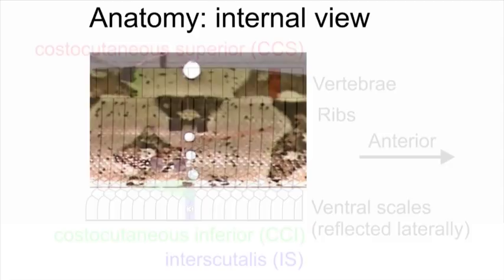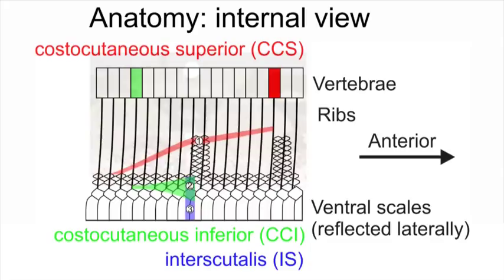The relevant muscles for this mode of locomotion are the costocutaneous superior in red, extending posteriorly and ventrally from the rib to the skin. The costocutaneous inferior in green extends anteriorly from the tip of the rib to the skin. And the fibers of the interscutalis muscle are in blue and confined to the skin, extending longitudinally from one ventral scale to an adjacent ventral scale.